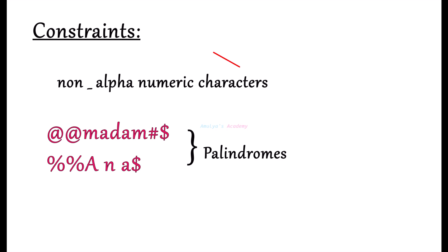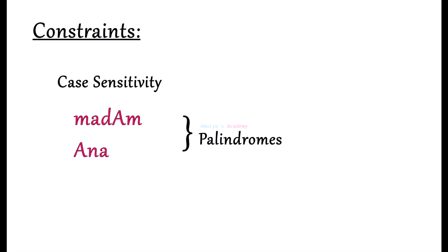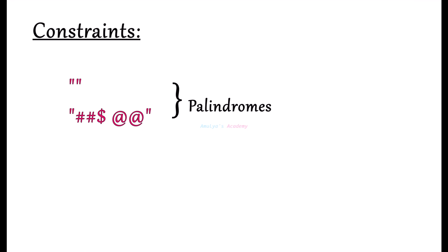When designing a valid palindrome check program, there are a number of constraints and considerations to take into account to ensure the program works efficiently and correctly under different scenarios. First, ignore non-alphanumeric characters — spaces, punctuation, or other non-alphanumeric characters should not be considered. For case sensitivity, uppercase and lowercase letters should be treated as the same. An empty string or a string with only non-alphanumeric characters is considered a palindrome.